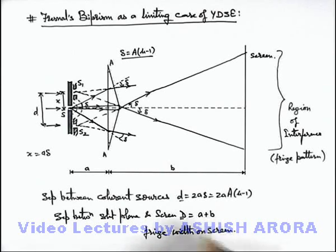If we know the values of small d and capital D, we can find out the fringe width on the screen, which is given by Young's double slit experiment we already calculated, which is λD/d. So this will be λ(a + b) divided by 2a·α·(μ - 1).